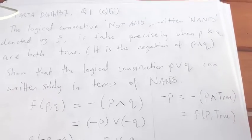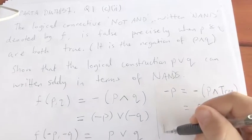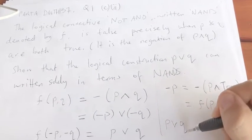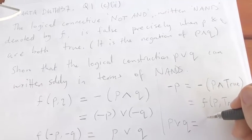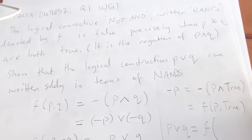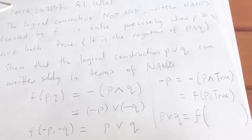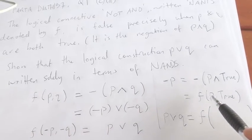And in that case, expressing P or Q strictly in terms of NANDs would be F of, and we want to write the negation of P and the negation of Q, but that's this.